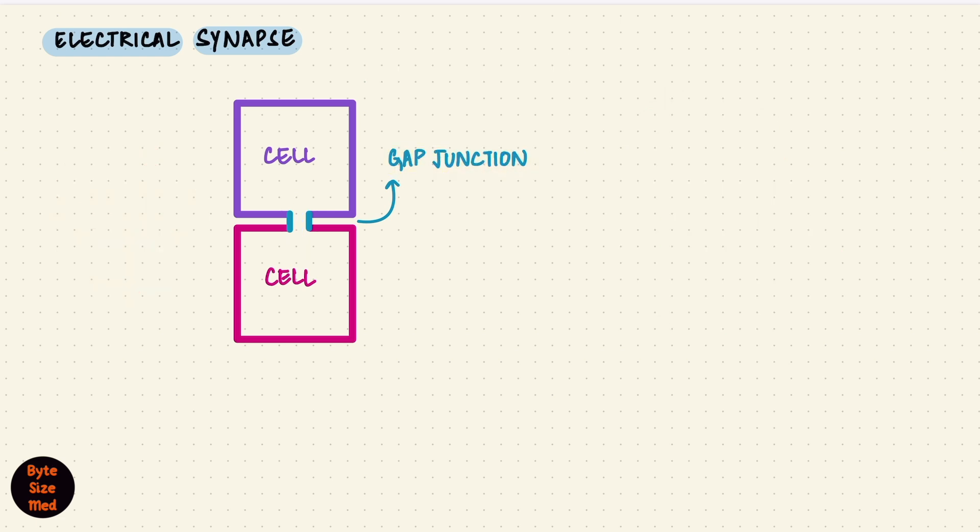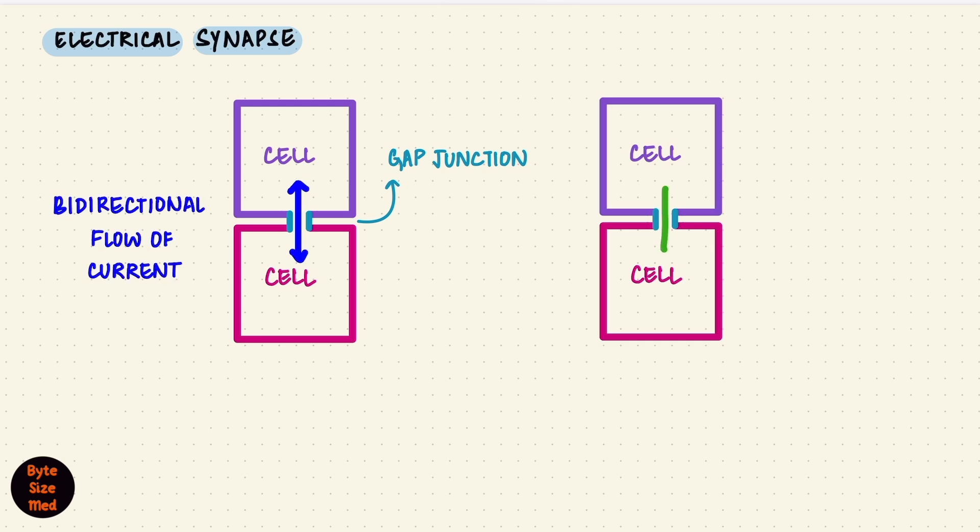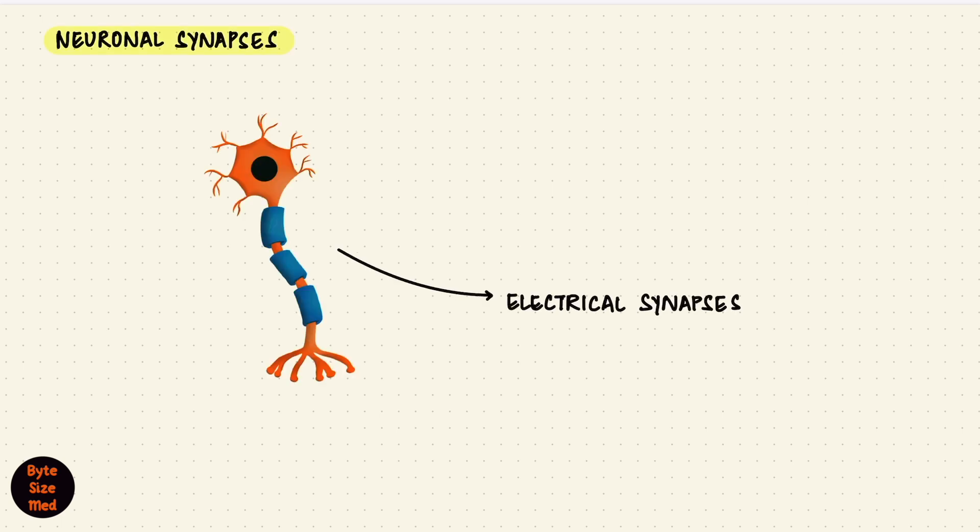Gap junctions can allow bidirectional movement of currents. Though there are some kinds of electrical synapses that only allow current to move in a single direction, these are known as rectifying synapses. However, most electrical synapses are bidirectional. We can see these types of electrical synapses in neurons as well, but the other type, that's the chemical synapse, is more complex and is more common.